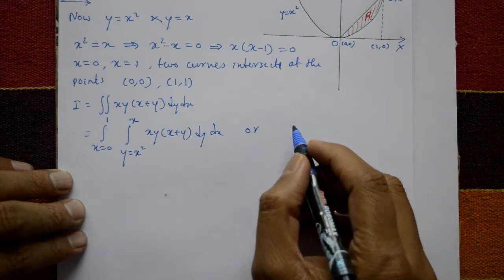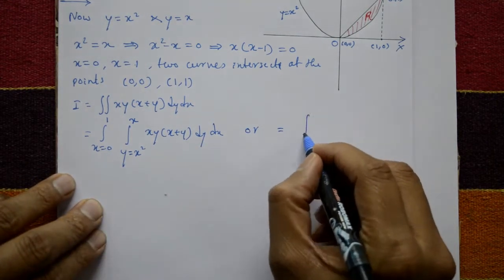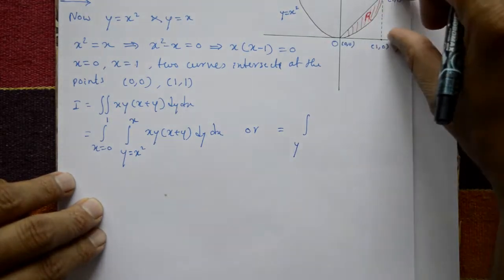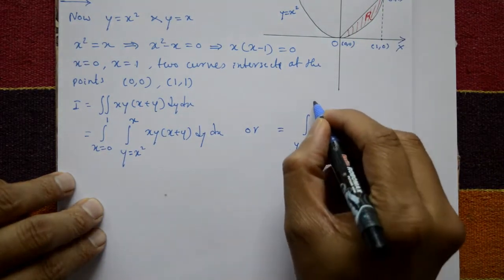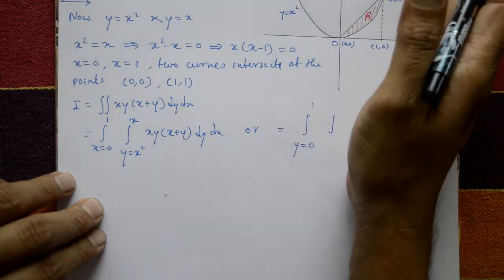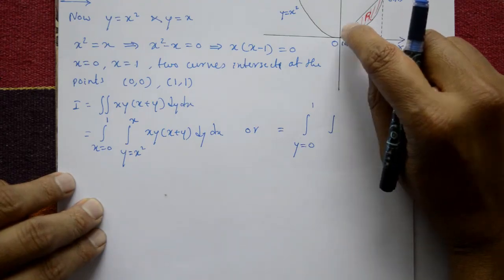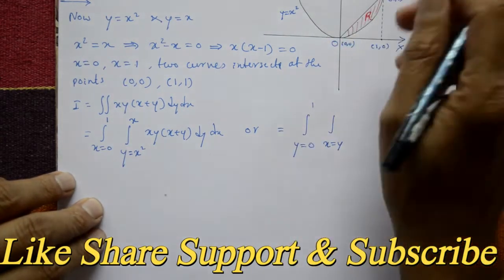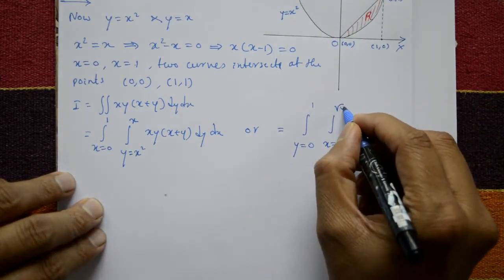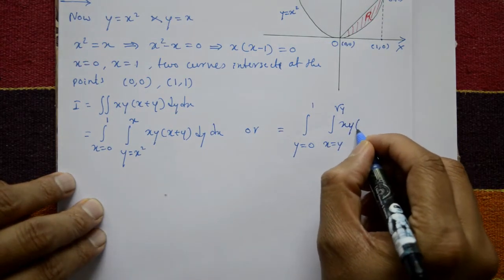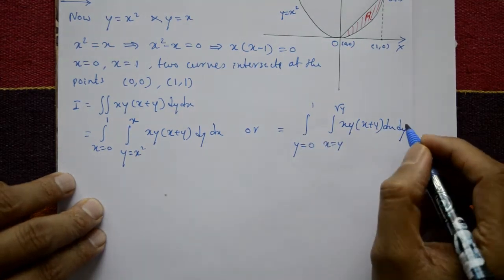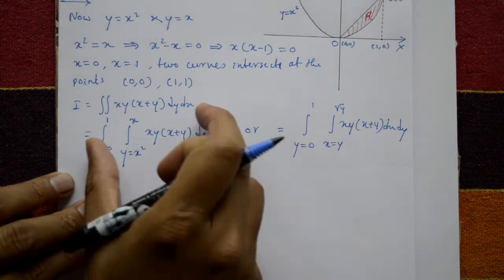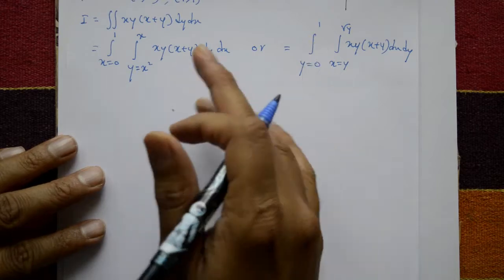Alternatively, we can set up the integral with y from 0 to 1 first. For x, we move from the left curve to the right curve. The left curve is the straight line x equals y, and the right curve is the parabola y equals x squared, which gives x equals root y. The integrand xy(x plus y) is then integrated with respect to x first, then y.